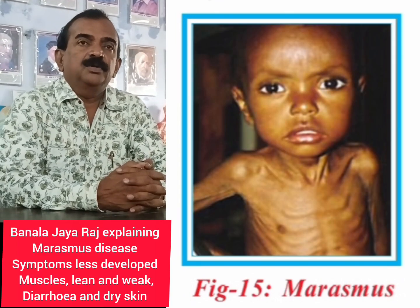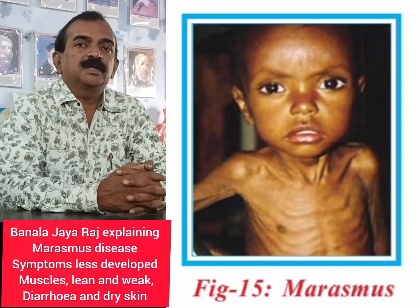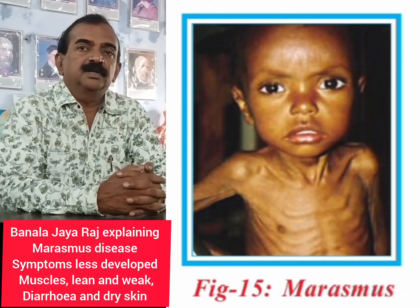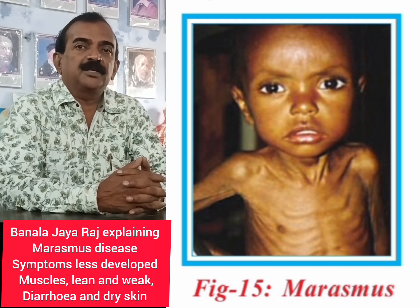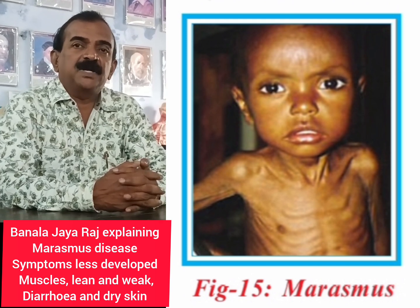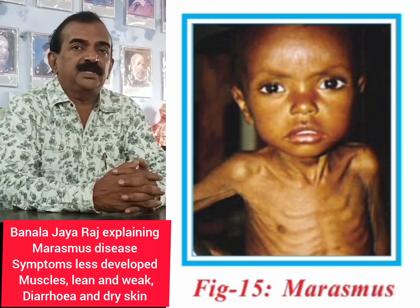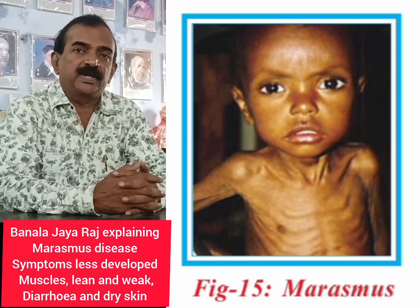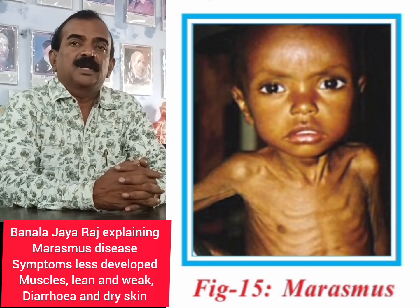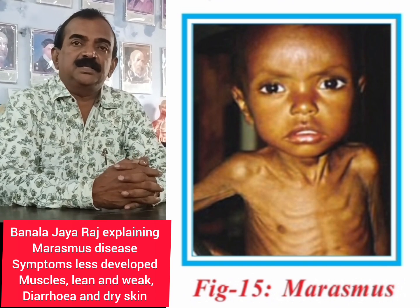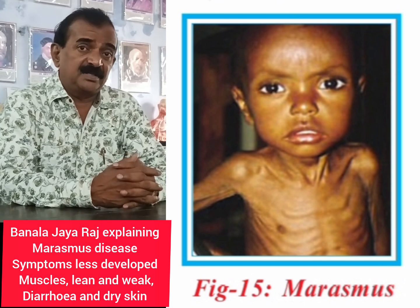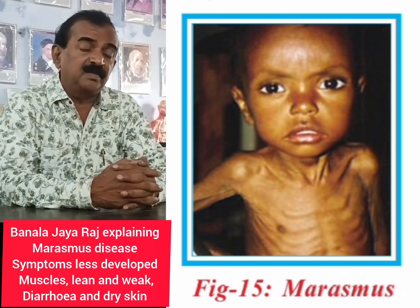In this video, you are observing a child suffering with a disease called Marasmus. Marasmus is a disease due to deficiency of proteins and calories in the diet. This disease generally occurs when there is an immediate second pregnancy or repeated childbirth.